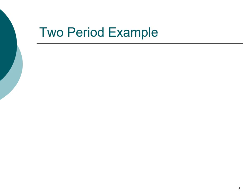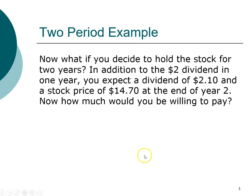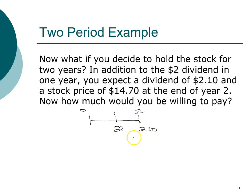Now let's look at the same company but holding the stock for two years instead of one. We'll get a two-dollar dividend in year one. In year two, we get two dollars and ten cents in dividends plus fourteen dollars and seventy cents from selling the stock, totaling sixteen dollars and eighty cents in year two. The discount rate remains twenty percent since it's the same stock.